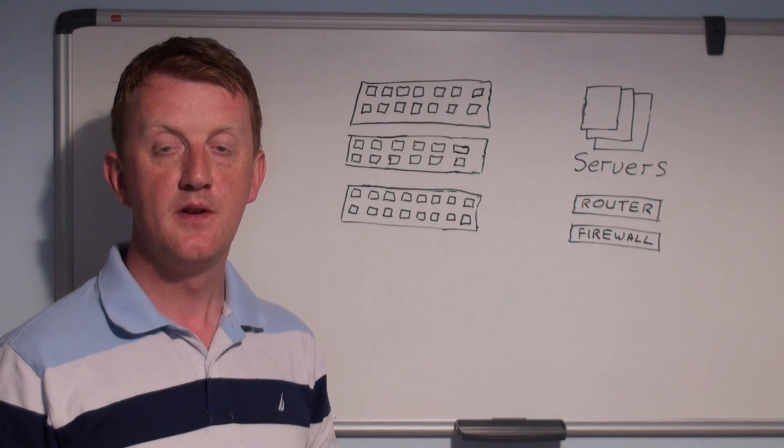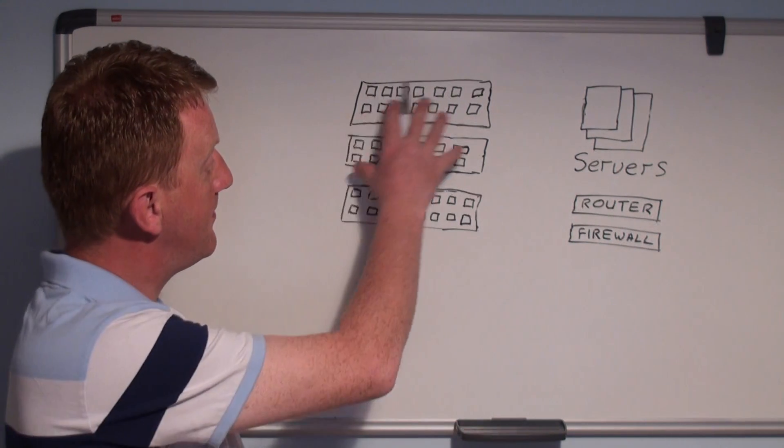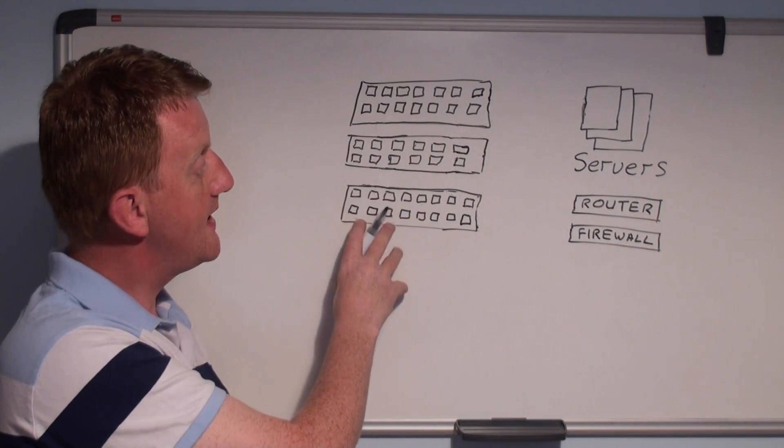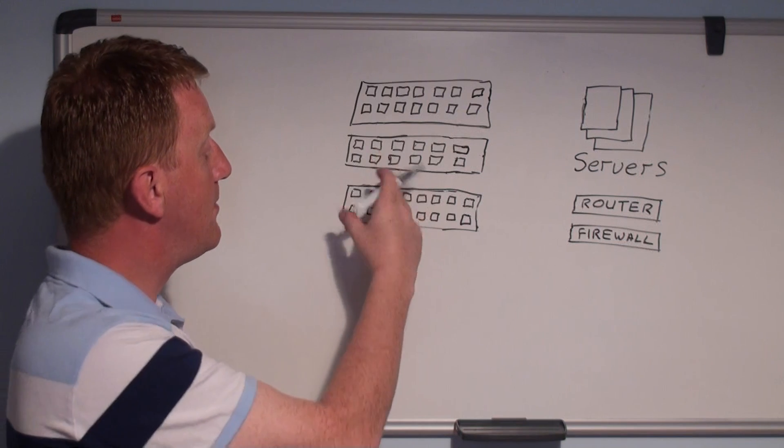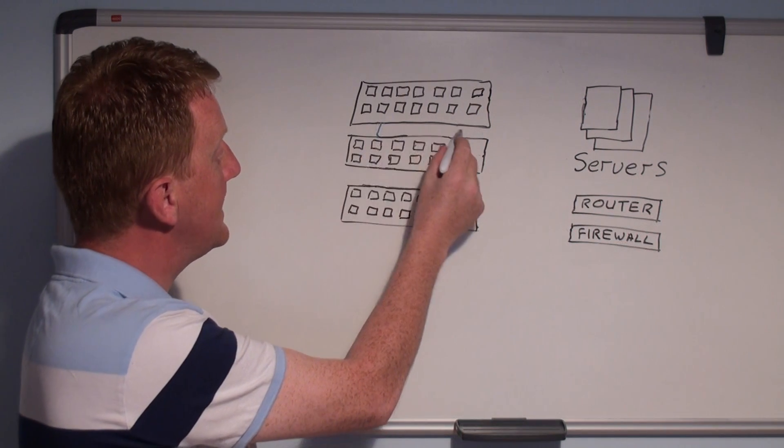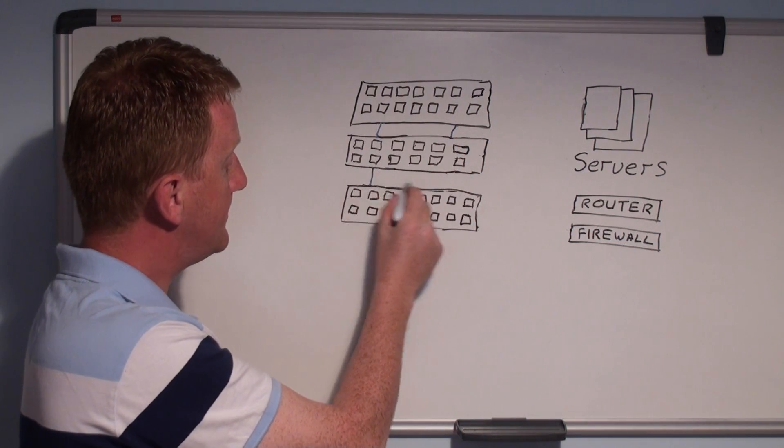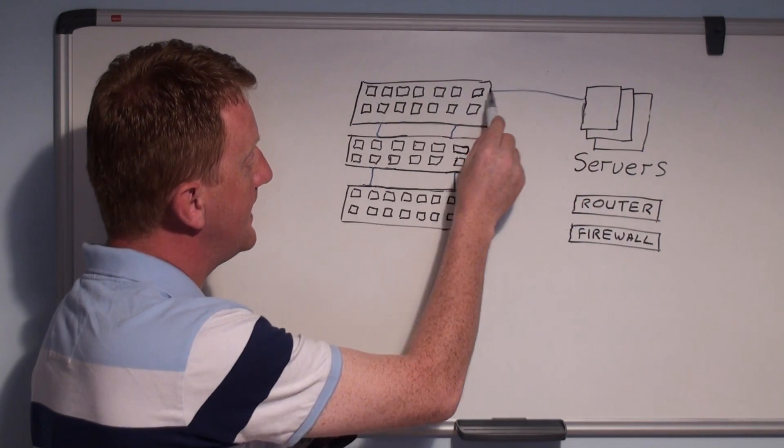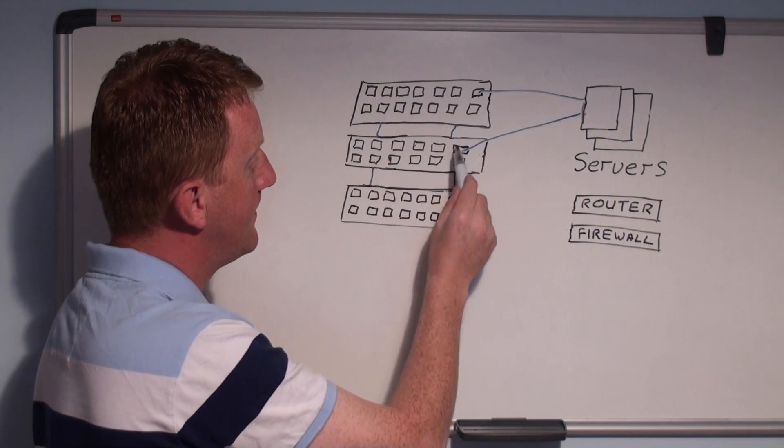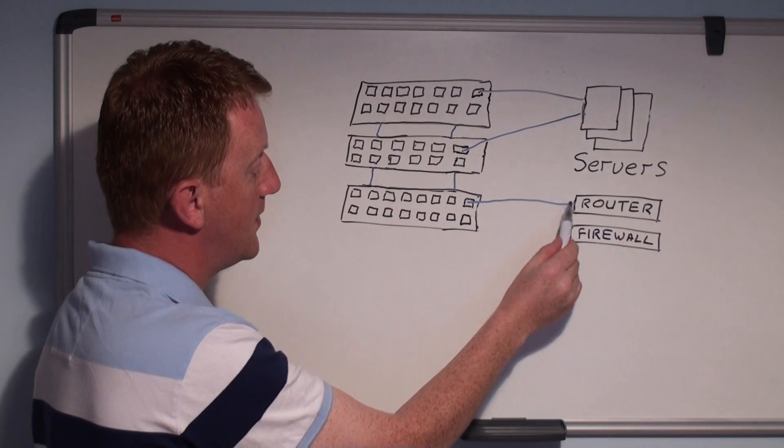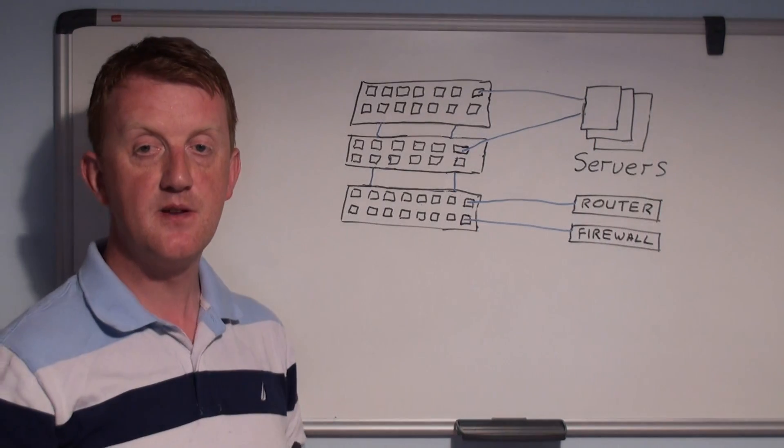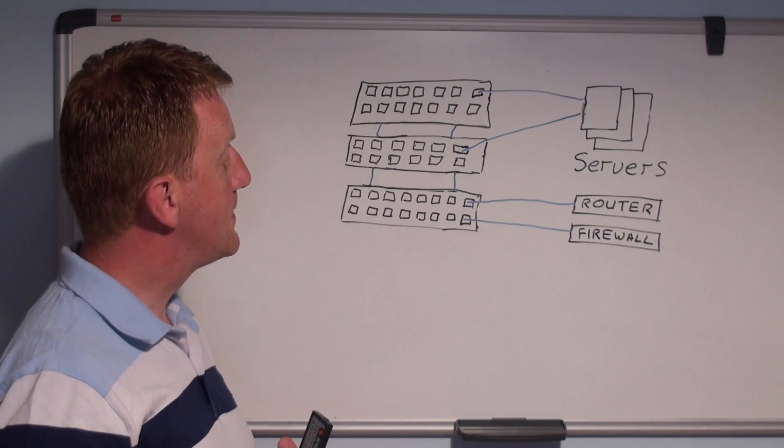In this video we're going to focus on networks which have multiple switches at the core. In the data center or server room, you've got multiple switches usually linked together using fiber, sometimes referred to as a switch stack. Your servers are directly connected into these switches. You may also have one or more routers connecting in and the internal interface of your firewall connected into these switches.